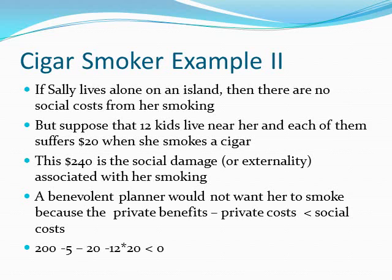If Sally lived alone on an island with nobody near her, there'd be no social costs from her smoking. But suppose 12 children live near her — not her children, just 12 kids — and each of them suffers $20 when she smokes a cigar. So her cigar smoking is a local public bad. The algebra shows 20 × 12 = $240, so the social damage or externality from her smoking is $240. Would a benevolent planner allow Sally to smoke? The answer is no. Her private net benefits are $175 (that's 200 minus 5 minus 20), but when you compare that against the $240 of damage her smoking causes, her smoking on net is negative for society and the benevolent planner would ban it.